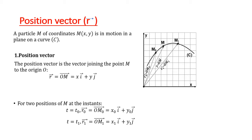For example, at t equals 0, r0 equals om0 equals x0i plus y0j. At t equals t1, r1 equals om1 equals x1i plus y1j. So, as it's obvious, the position vector has an origin o, a line of action joining o with m, and a direction from o to m.